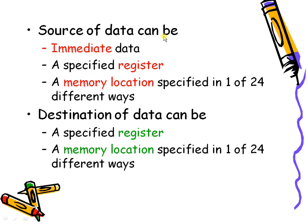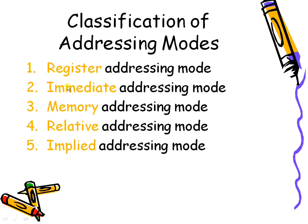The source of data can be of immediate data, it can be present inside a register, or it can be in a memory location in one of 24 different ways. The destination can be a register or a memory location. The different types of addressing modes supported by the 8086 processor are: register addressing mode, immediate addressing mode, memory addressing mode, relative addressing mode, and implied addressing mode.